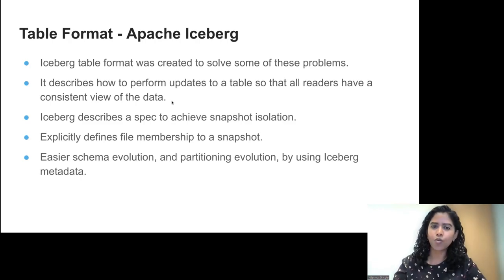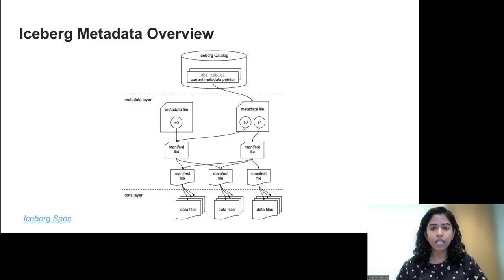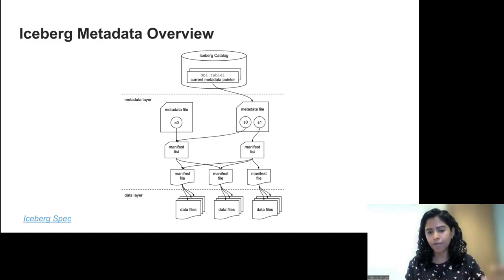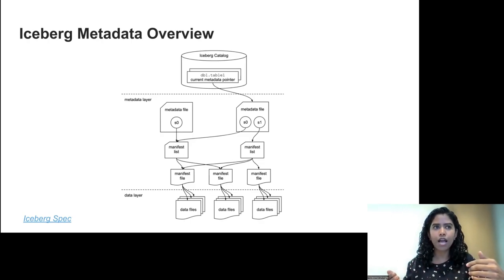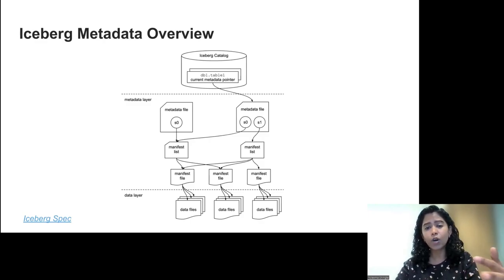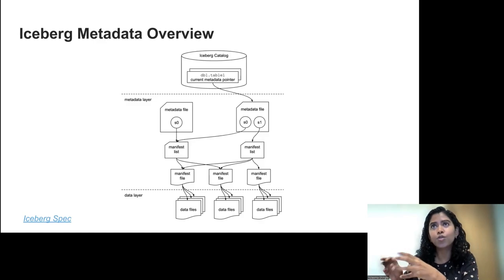Let's take a deeper look into how Iceberg achieves this. In the earlier diagram, we had one flat storage layer with Parquet and ORC files and a compute layer. Now we see a tiered system: a data layer, a metadata layer, and a catalog. The data layer continues to have Parquet and ORC files, but we have an explicit metadata layer with a metadata file, a manifest list, and a manifest file. Together they maintain a snapshot of the table. As DML operations happen, newer snapshots appear and you get snapshot isolation. The catalog is simply a key-value store mapping a table name to its root metadata file.